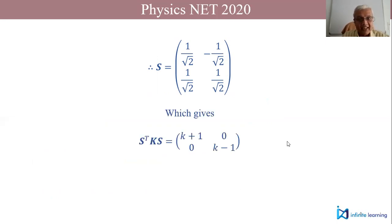In that case, if you take S transpose K S, you can actually substitute the S matrix and its transpose and the K matrix as we took in the previous slide and work out the product. You will see that it becomes [[k+1, 0], [0, k-1]].